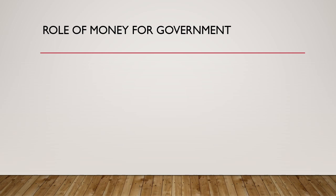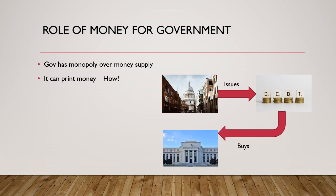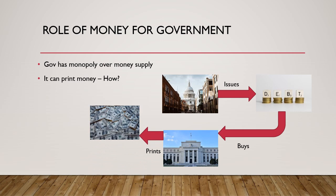What is the role of money for the government, and how is it different from us? The government has a monopoly over money supply because it can print it. The government issues debt when its expenditure exceeds its income. The central bank — the Federal Reserve in the case of the US — buys that debt by printing money out of thin air and giving it to the federal government. This is how the government can indirectly print money, and in modern context this is also called quantitative easing.